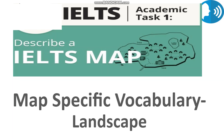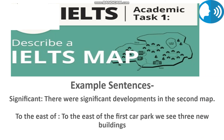There is also vocabulary to describe landscape. Words like 'bay,' 'bog,' 'strait,' 'stream,' 'tide,' 'tributary,' and 'valley' can be used to describe the landscape. I've also brought some example sentences for practice. For example, using 'significant': 'There were significant developments in the second map.' Using cardinal directions: 'To the south of the lake, we can see a new footpath leading to the lake.' Go ahead and practice your own examples to become thorough.